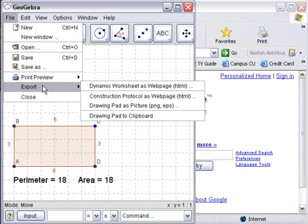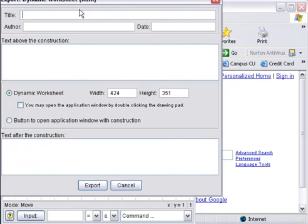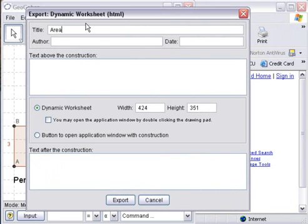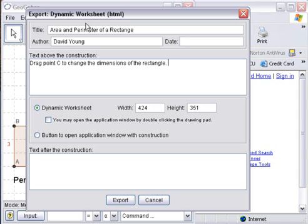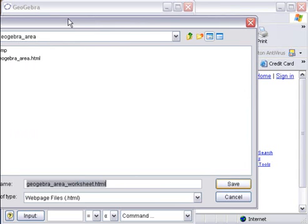Then I'm going to go to file, export, and I'm going to choose dynamic worksheet as webpage. And fill out this form. Title I'll call it, area and perimeter of a rectangle. Put my name in as the author. Text above the construction, I'll put some instructions. So I'll say drag point C to change the dimensions of the rectangle. Okay. And text after construction, you could put in a question maybe. You could say, what is the smallest possible perimeter for a rectangle with area 36?